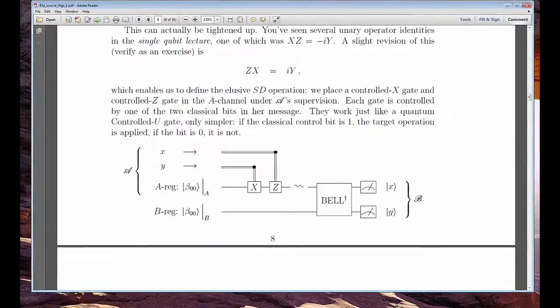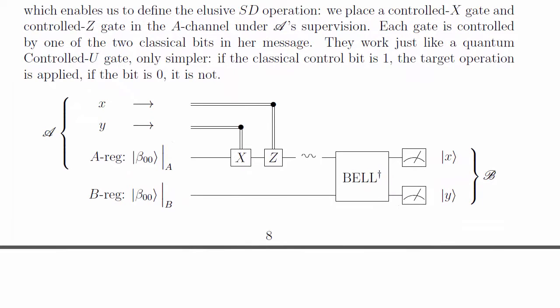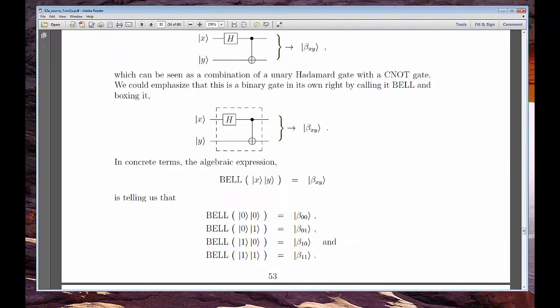I'll discuss the entire process and show a circuit that makes use of two unary gates, X and Z, followed by the binary Bell gate, which we saw last week was a combination of CNOT and the first order Hadamard.